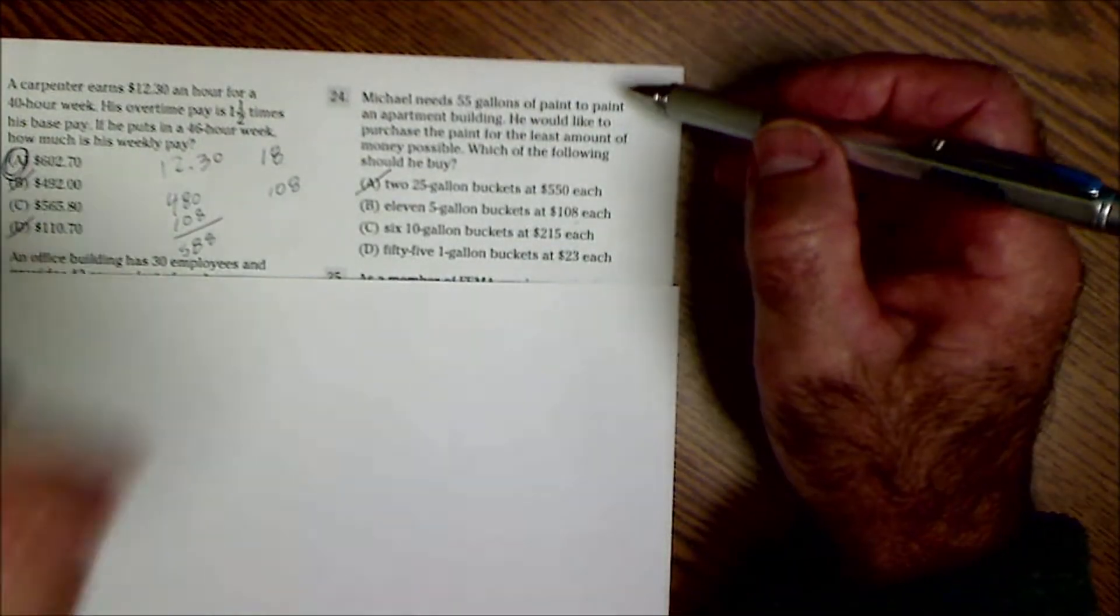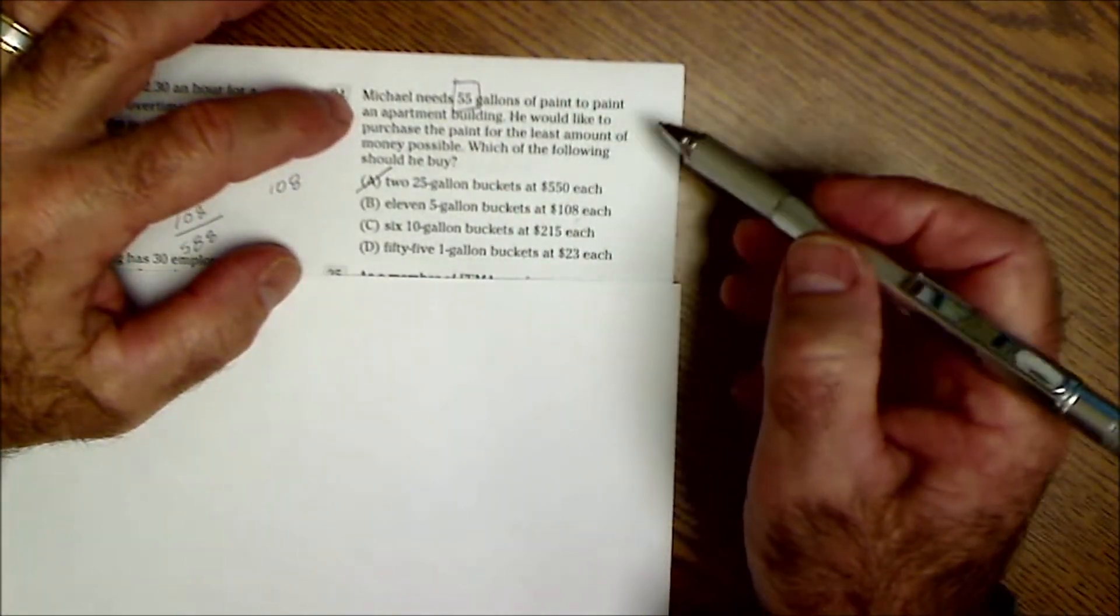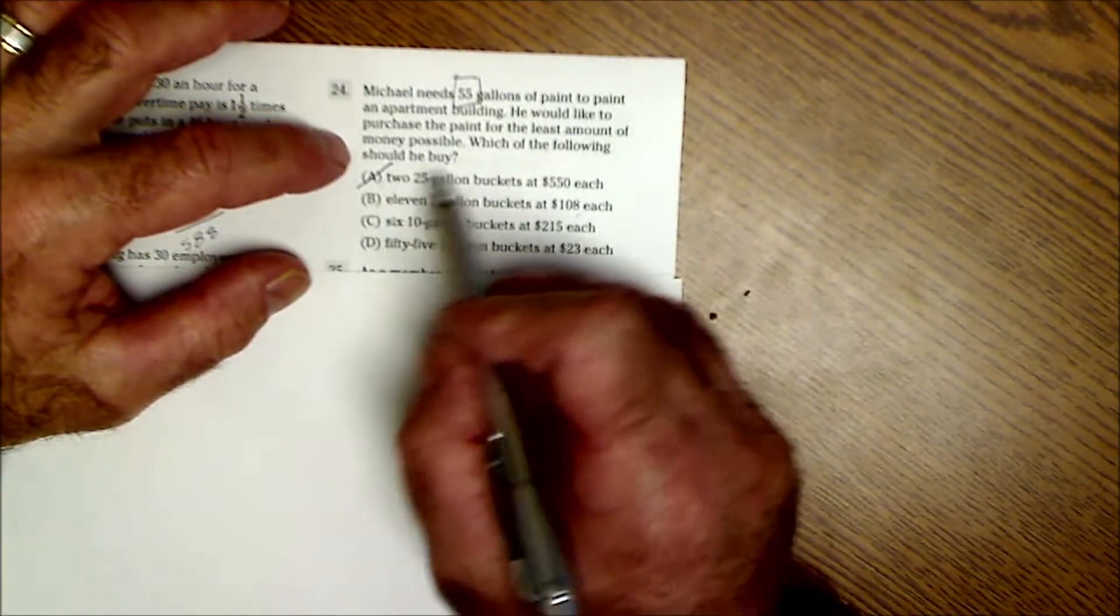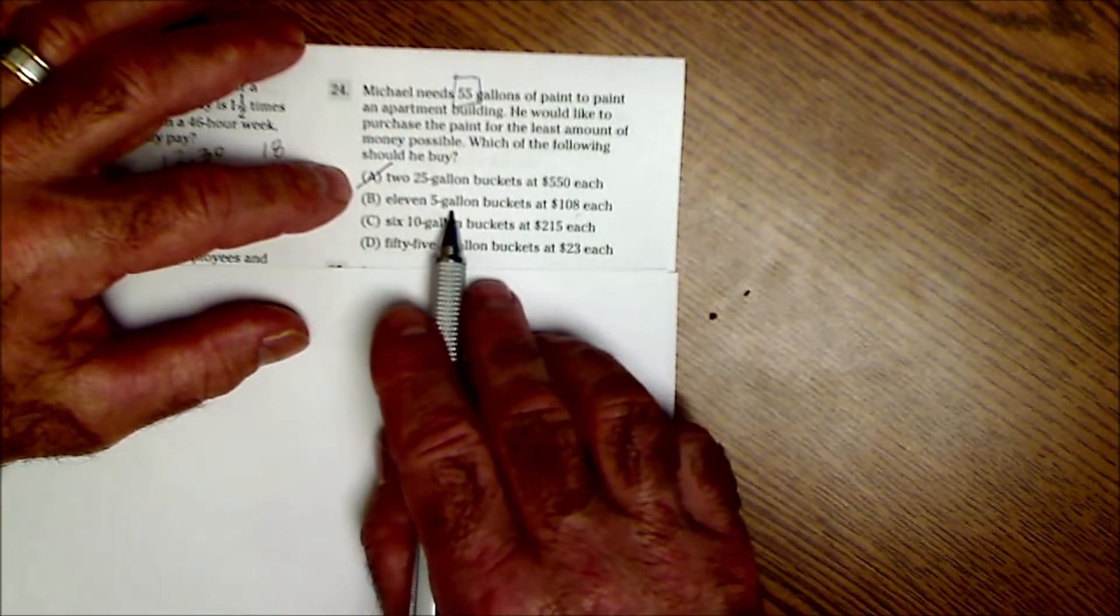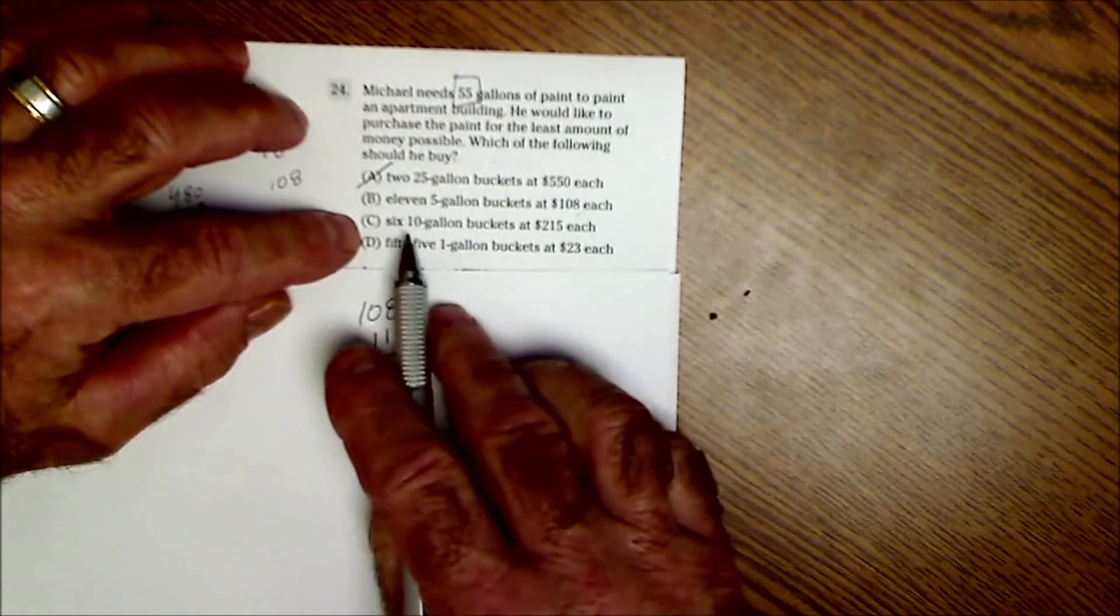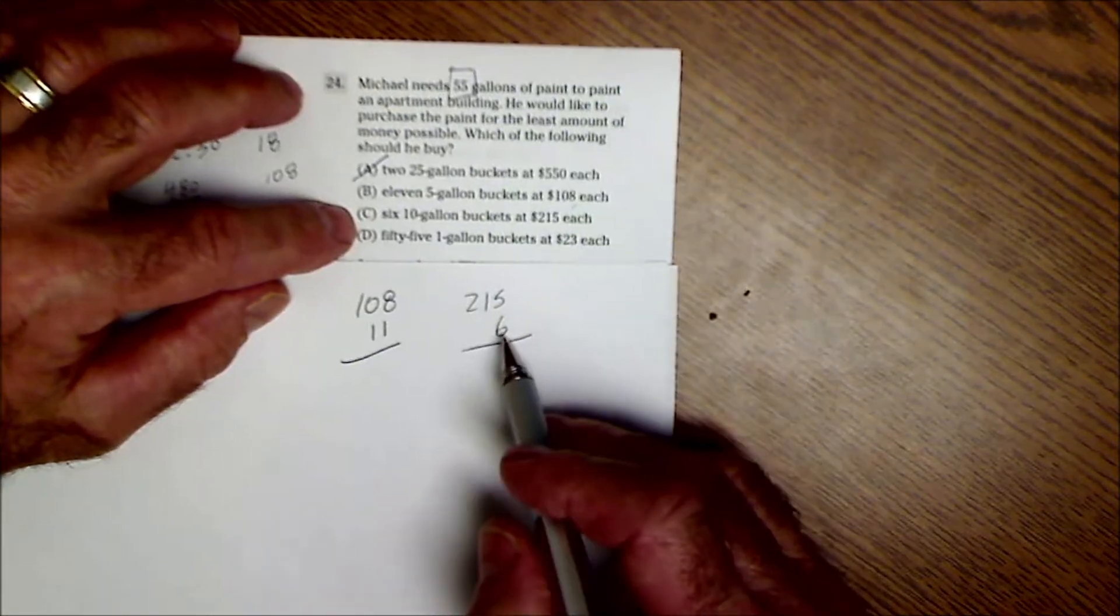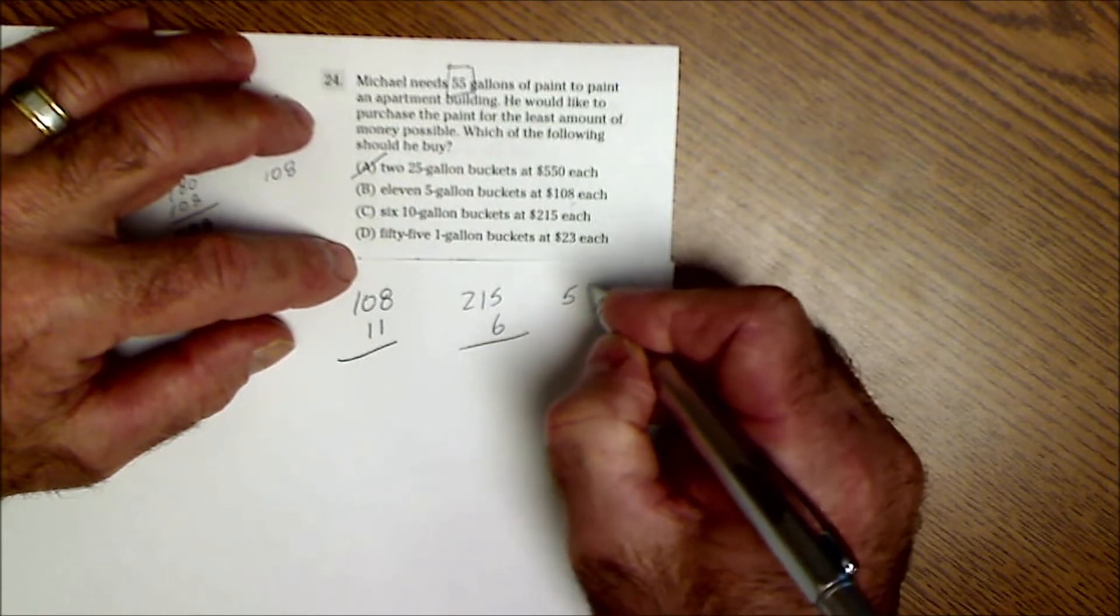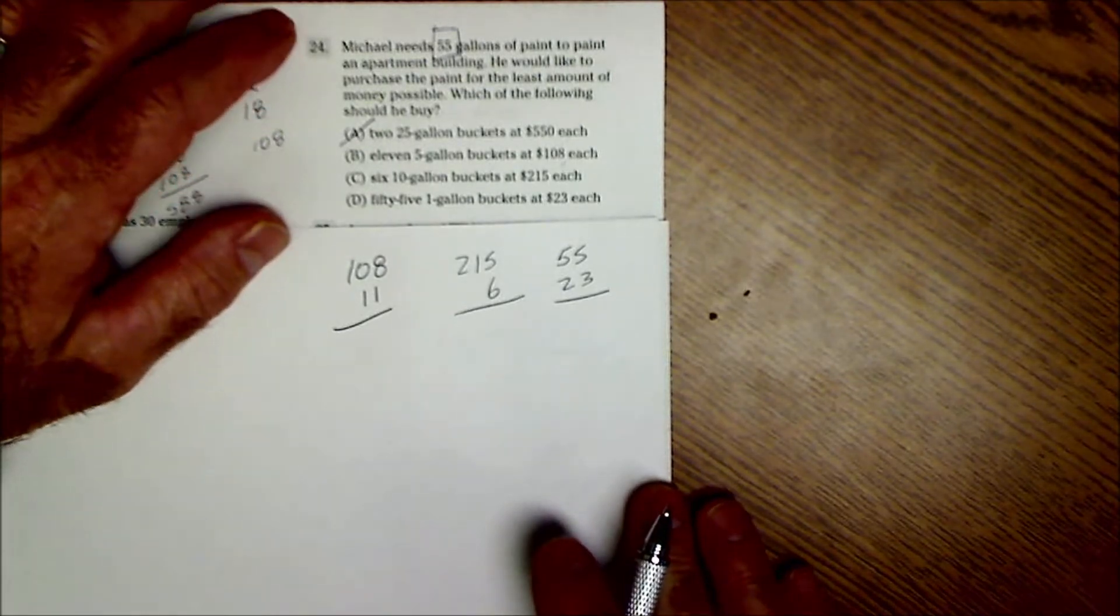Number 24. He needs 55 gallons of paint. And he wants to spend as least as possible. With two 25-gallon buckets, that's not going to work. So we're going to cross that out. Then I have 11 five-gallon buckets. That'll give me 55 gallons exactly. So that's going to be 108 times 11. Six 10-gallon buckets. So that's going to be 215 times six. 55 one gallon buckets. So 55 times 23. I might just have to do these out.